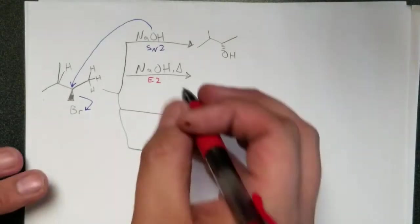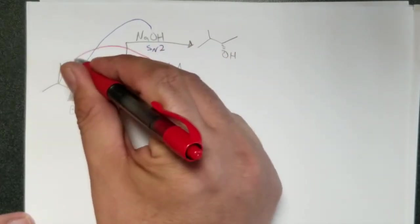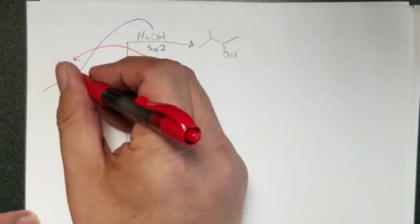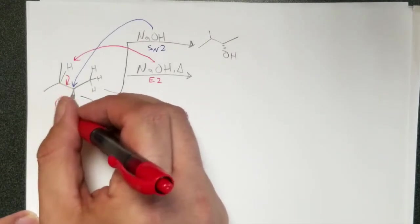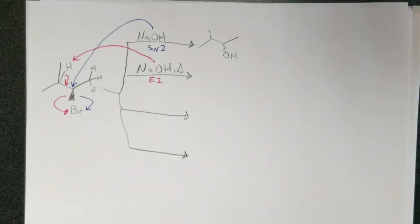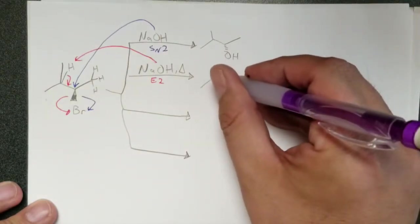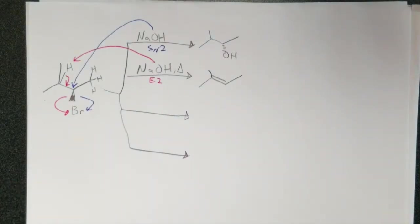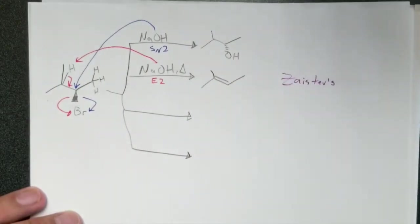So I'm going to go ahead and draw both products, but I'm going to show the arrows to give the major product. So you go ahead and grab the H. So the red arrows here are for the E2. We get the new double bond, kick out the leaving group. So then we get this product here, and we call this the Zaitsev's product. So that was the Zaitsev's. Basically, it's more substituted.